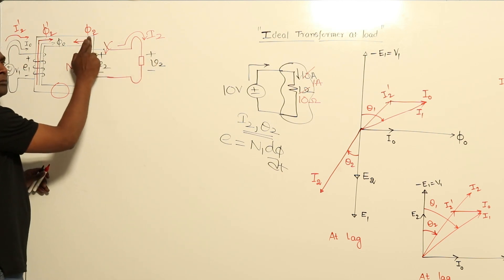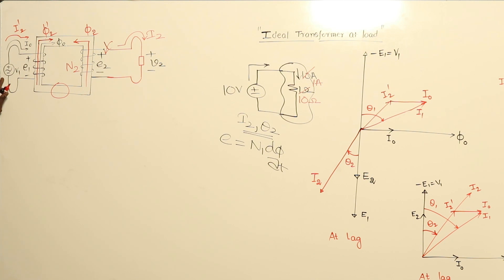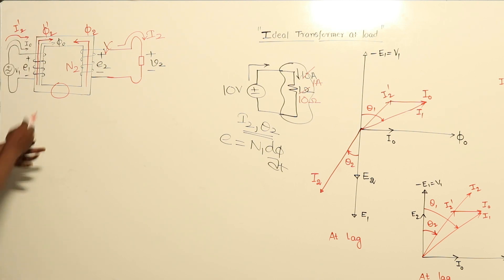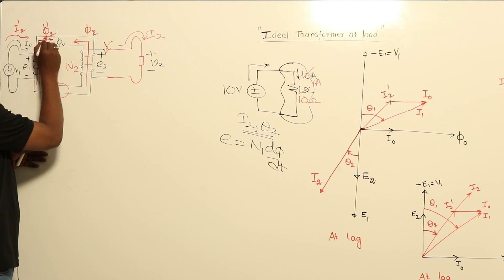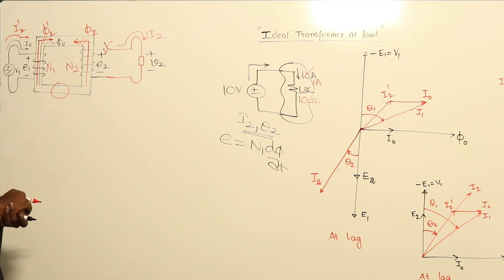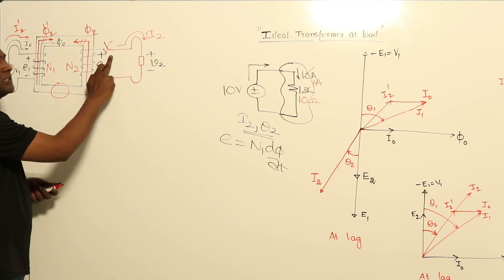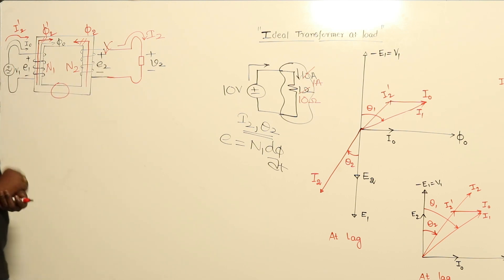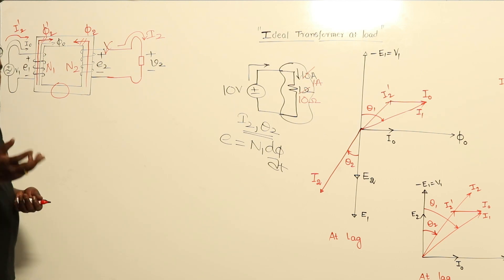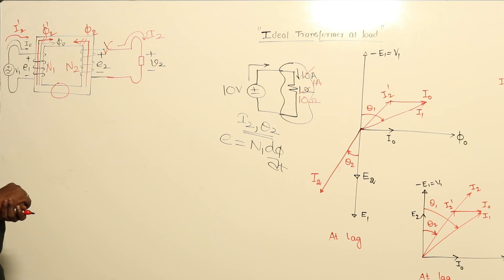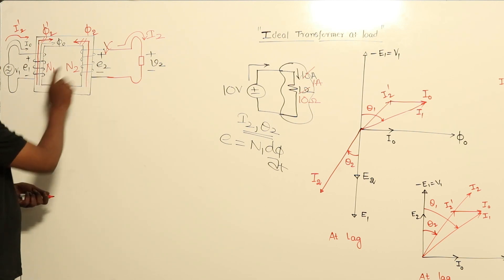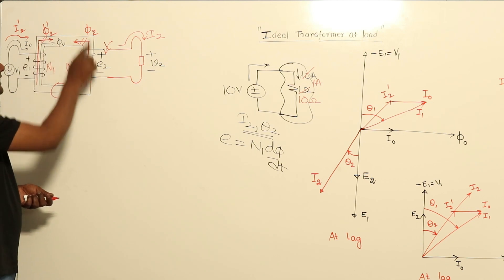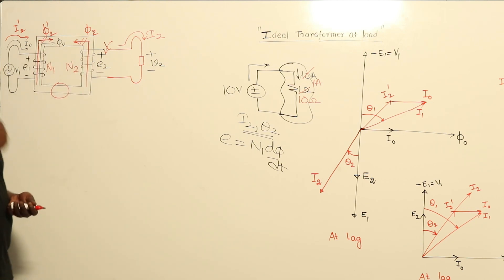Since the independent voltage source can deliver any amount of current, it will deliver a compensating current I2-dash such that I2-dash flowing through N1 creates flux φ2-dash. This φ2-dash will exactly compensate φ2, so the net flux remains φ₀ only. Even at loaded conditions, in the ideal transformer case, the net flux stays constant — that is why we call the ideal transformer a constant flux machine.